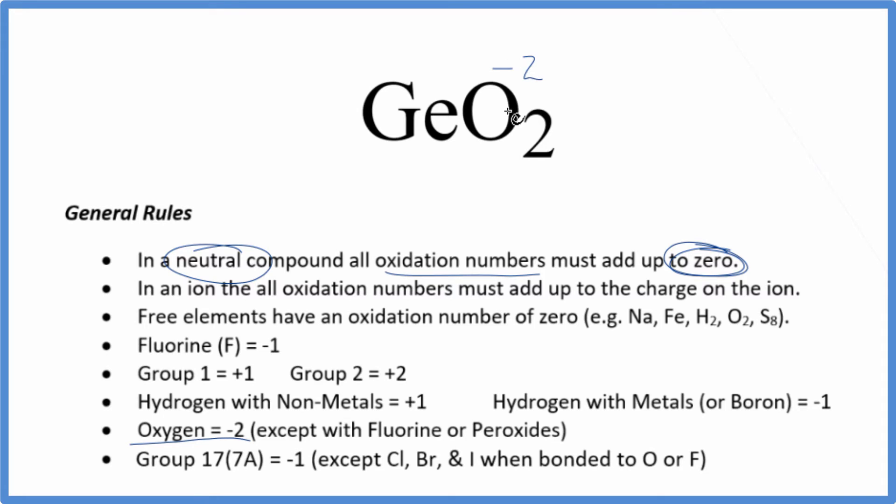Since each oxygen is minus two and we have two of them, two times minus two, that's minus four. The only way we get this all to add up to zero is to have a plus four as the oxidation number on the Ge in GeO2.